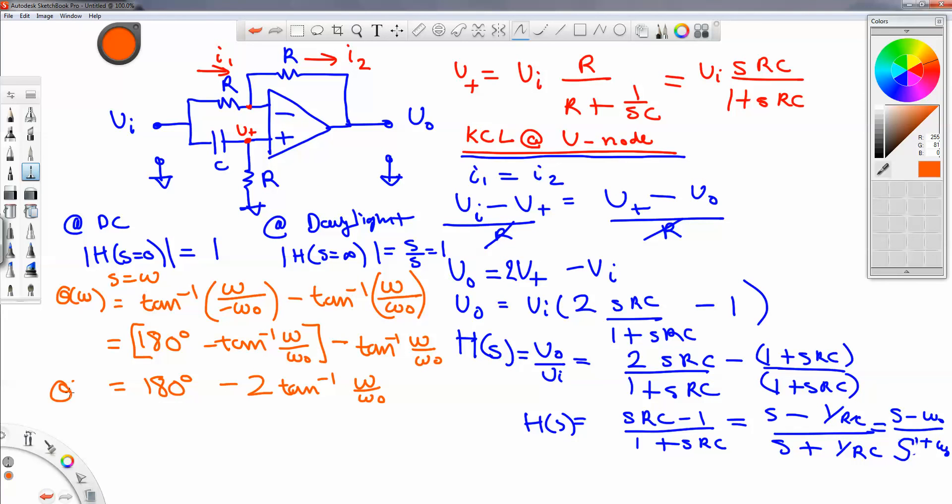At DC, omega equals to zero. So you have tangent inverse of zero, which is zero, so you have 180.